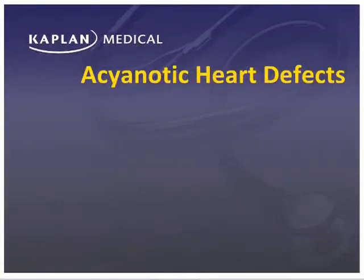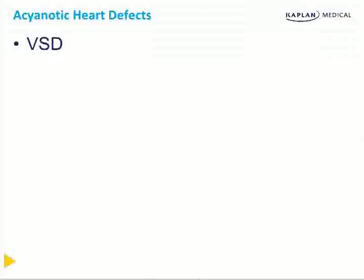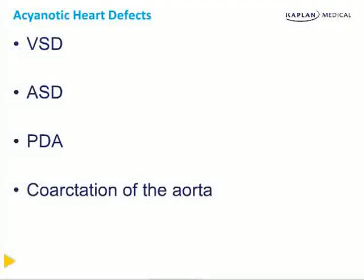Welcome to the second lecture on pediatric cardiology, where we're now discussing acyanotic heart defects — those that do not make the baby blue. You can imagine this makes them inherently more difficult to catch right away without a proper physical exam. Here are the four acyanotic heart defects we're going to discuss: VSD (ventricular septal defect), ASD (atrial septal defect), patent ductus arteriosus (PDA), and coarctation of the aorta. This is a rich area for step two questions because they're relatively common and a particularly glaring example of where pathology meets physiology.